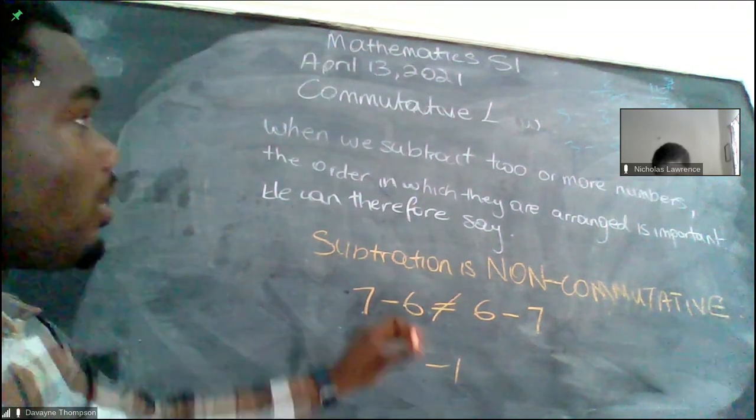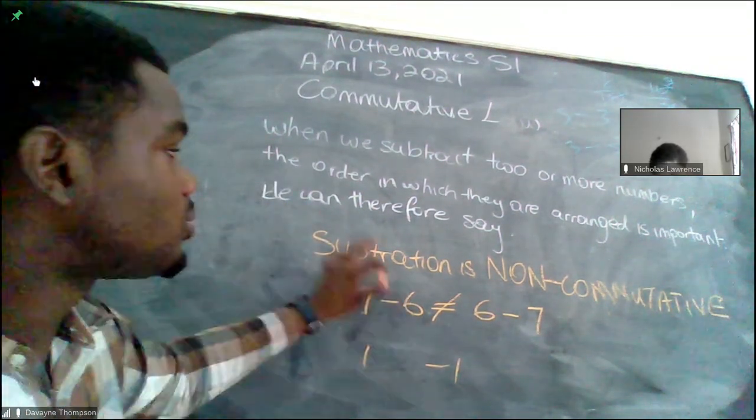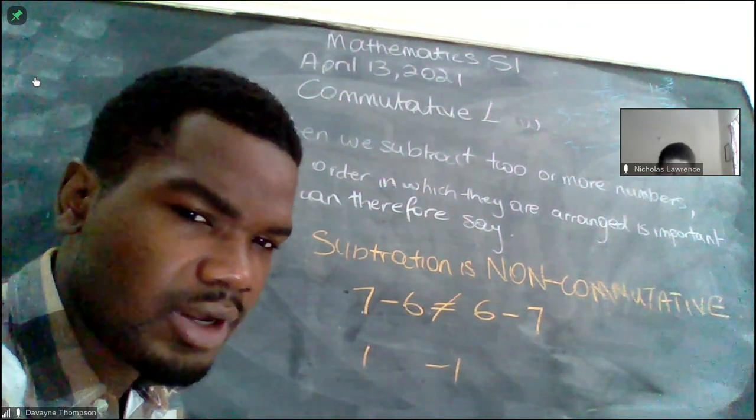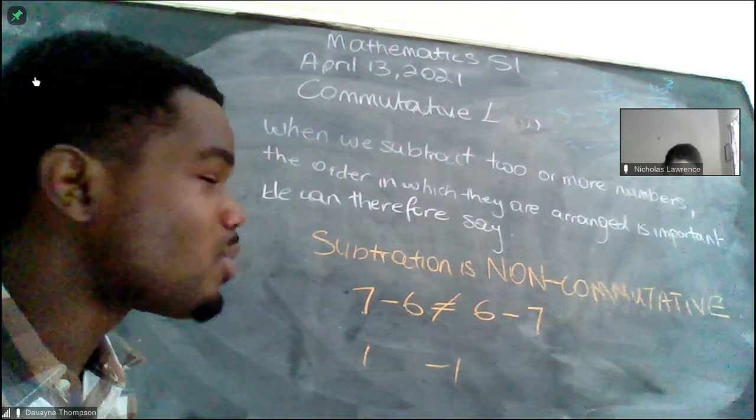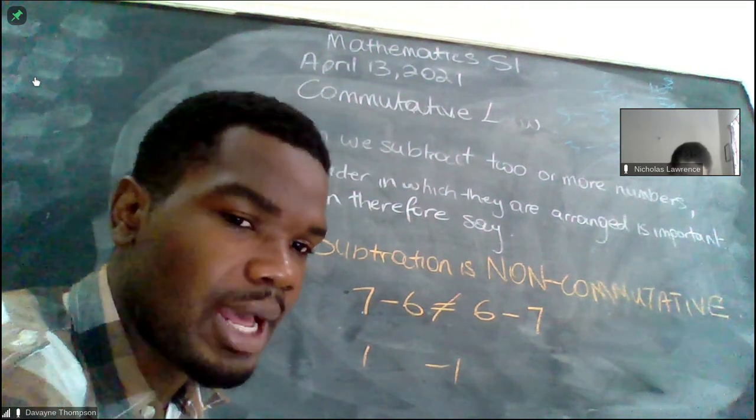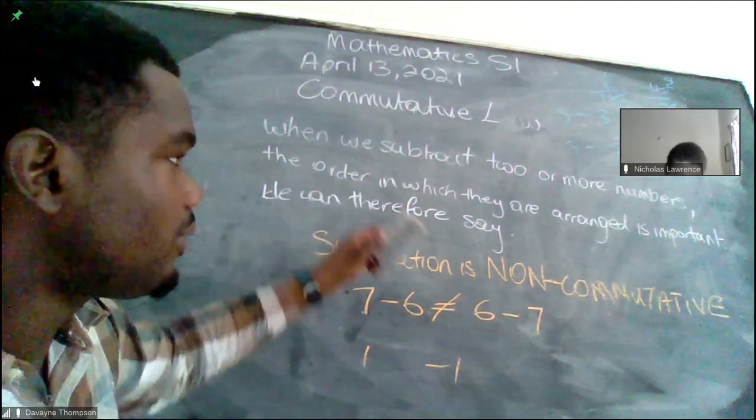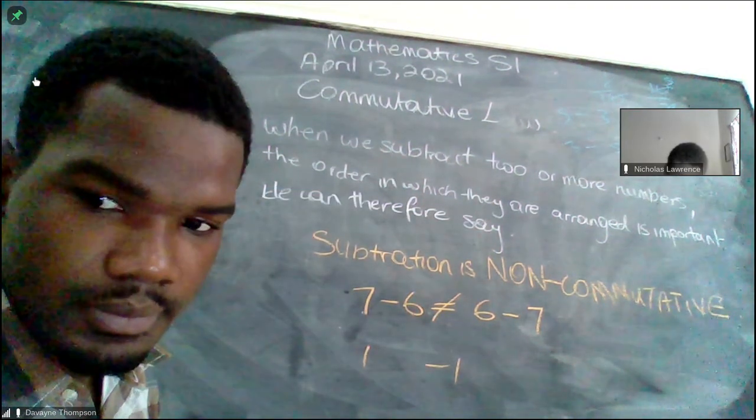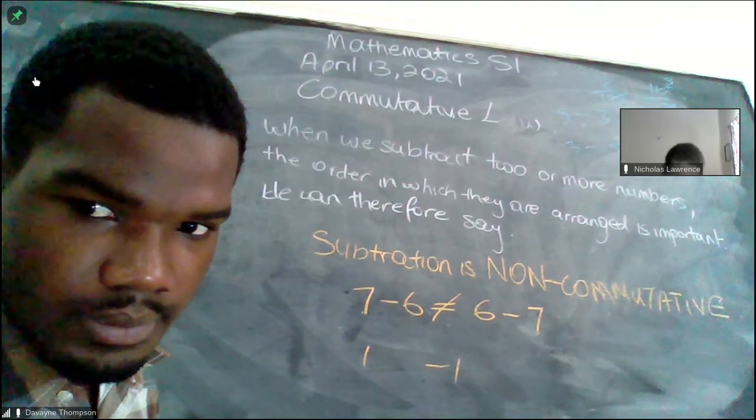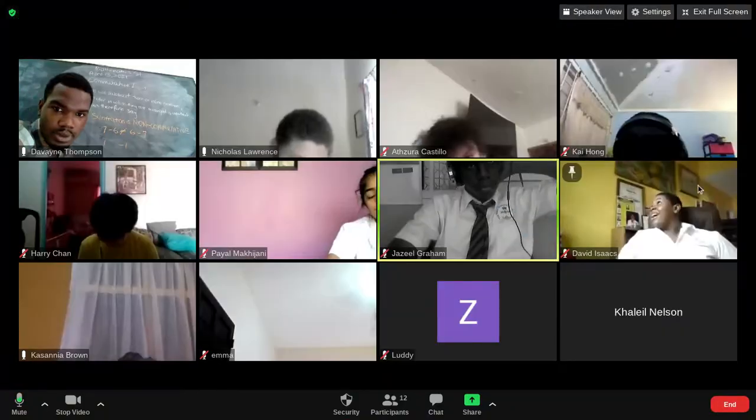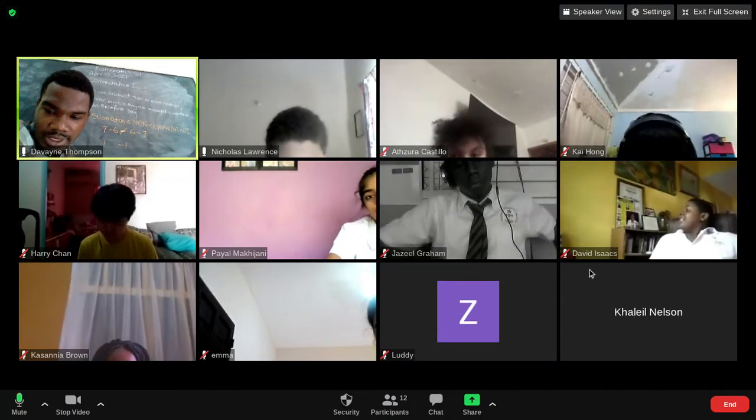Now we're going to look at what division has to say about commutative law. To explain division I'm going to draw everybody's favorite food, pizza. I'm going to draw pizza on the board. Can I rub this off? David, pay attention for me.